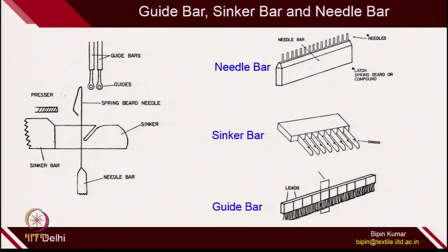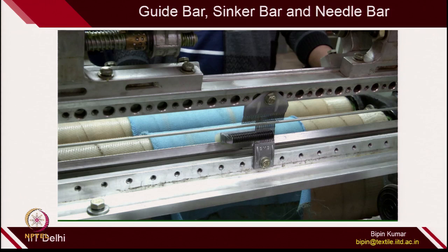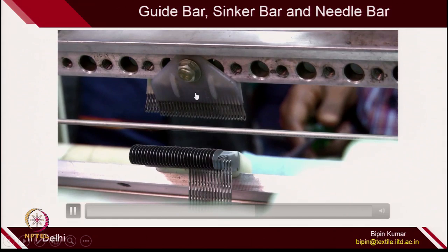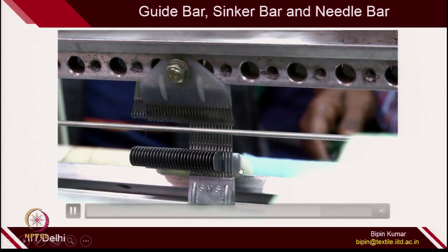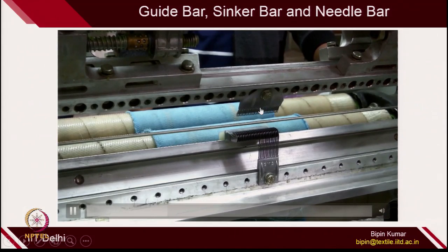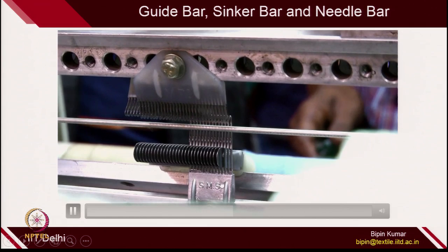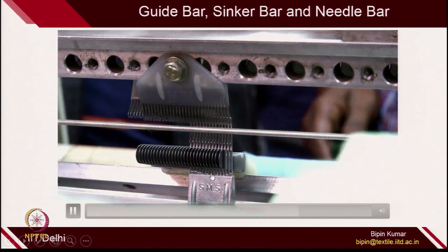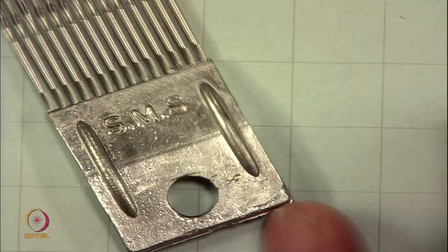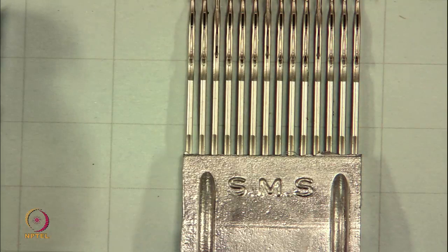These are the 3 blocks placed on the machine: guide bar, sinker bar, and needle bar. This is one block of needles — the needle moving up and down. This is the guide block, and the third block is the sinker. Three blocks are visible: needle, sinker, and guide on top. I have the 3 blocks of needle, sinker, and guide block in our lab. There are many sinkers placed on the sinker block, and each sinker is fixed in this block.